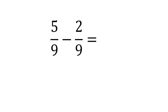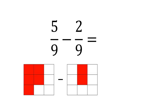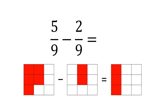What about if we're subtracting fractions? We're going to try five ninths minus two ninths. Looking at that in pictorial form, we've got squares divided into nine. Five ninths are coloured in on the first one. If we take away two ninths, we take away two of those boxes and we're left with three — three ninths. Just like with addition, the denominator stays the same, and we do the subtraction with the numerators: five minus two is three, so we get three ninths.